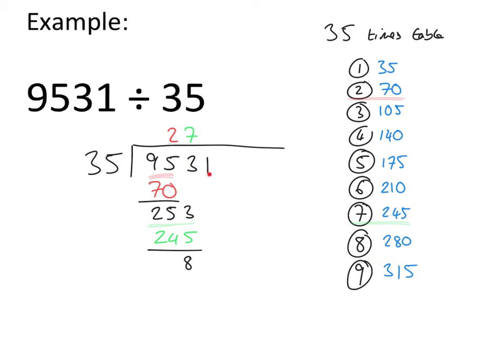We bring down the 1 from the top line to sit next to the 8, and we go through the process for a third time. How many 35s are there in 81? Looking down our times table, 70 is the number before we get to 81. So we write 70 underneath 81, and 2 on the top line. And we do our subtraction for the final time.